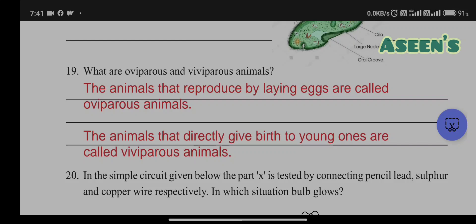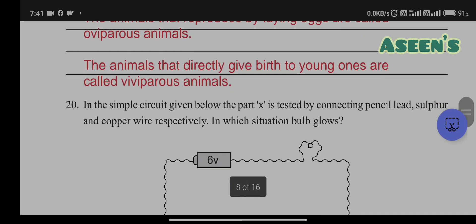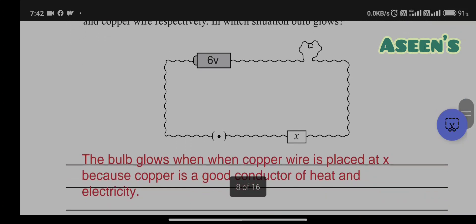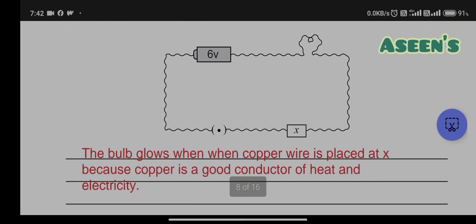Question 20: In the simple circuit given below, the part X is tested by connecting pencil lead, sulfur, and copper wire respectively. In which situation does the bulb glow? Among these three things, the one which is a good conductor of heat and electricity is metal. Therefore the answer has to be copper wire because copper is a good conductor of heat and electricity compared to the rest two.